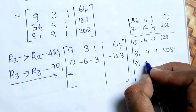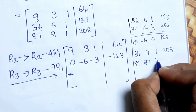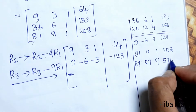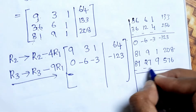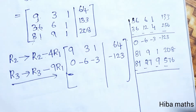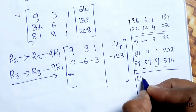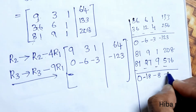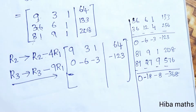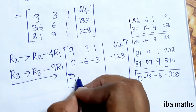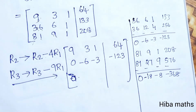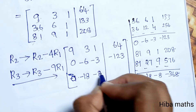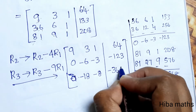For R3: 9×9 = 81, 9×3 = 27, 9×1 = 9, 9×64 = 576. So R3 becomes: 0, 9 - 27 = -18, 1 - 9 = -8, 208 - 576 = -368. The updated matrix is: row 1: [9, 3, 1 | 64], row 2: [0, -6, -3 | -123], row 3: [0, -18, -8 | -368].